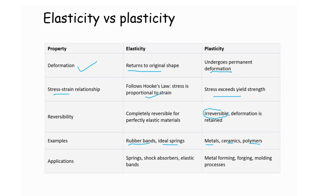In terms of application, elasticity is used in springs, shock absorbers, and elastic bands. For plasticity, examples of application include metal forming, forging, and molding processes.